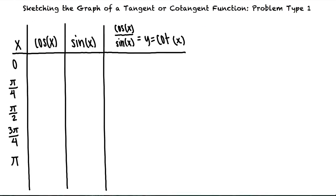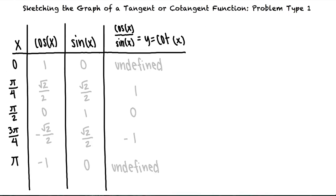If we plot a few key points we notice that the period is still pi but the asymptotes are now at x equals zero, x equals positive or negative pi, x equals positive or negative two pi and so on.